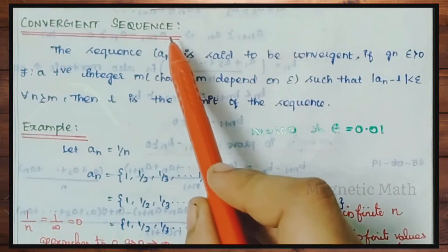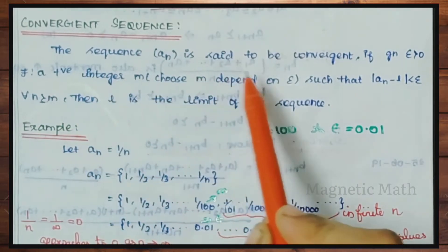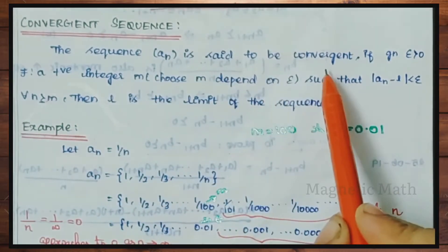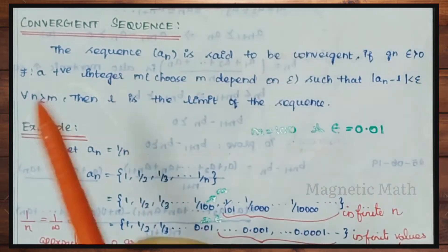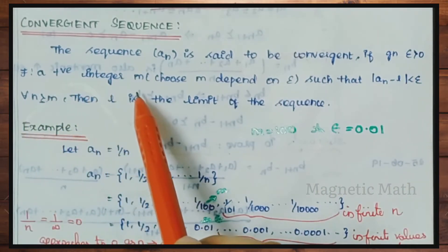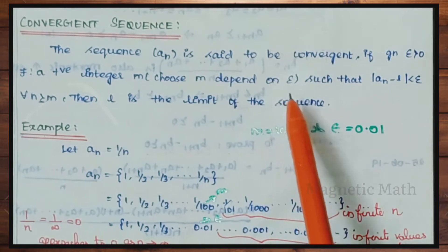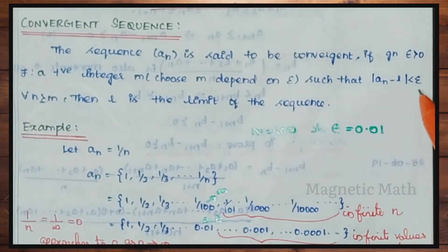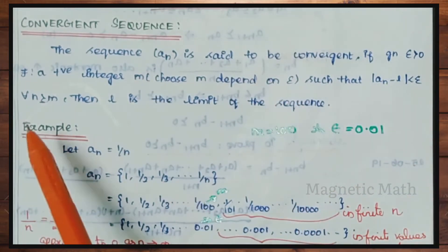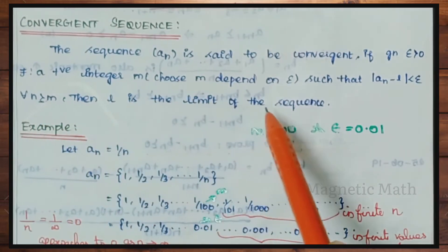Convergent sequence — definition. The sequence an is said to be convergent if, given epsilon greater than 0, there exists a positive integer m (where m depends on epsilon), such that the modulus of an minus L is less than epsilon for all n greater than or equal to m. Then L is the limit of the sequence.